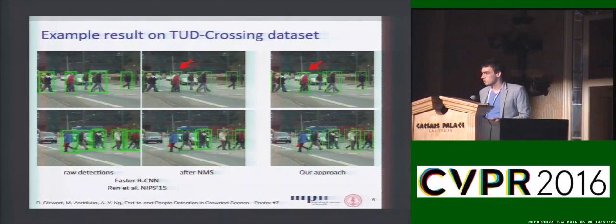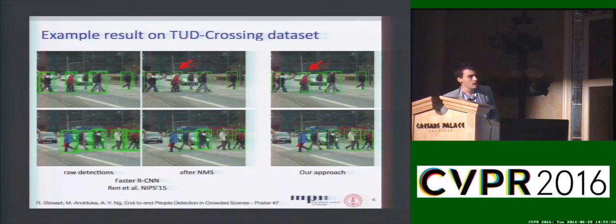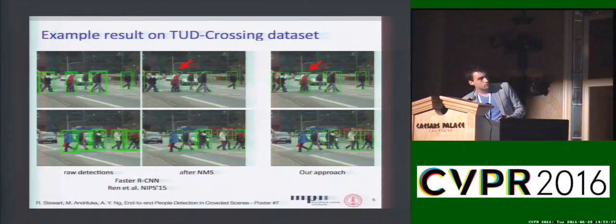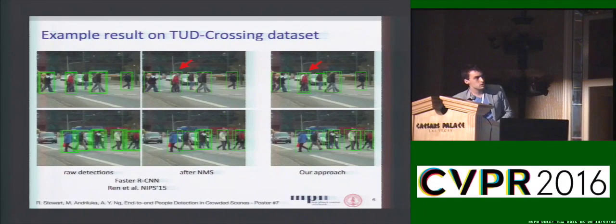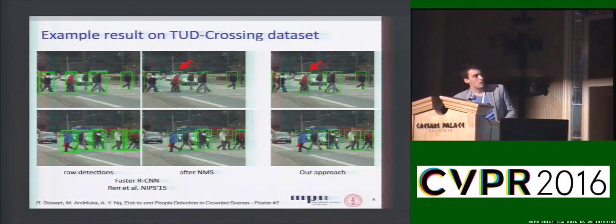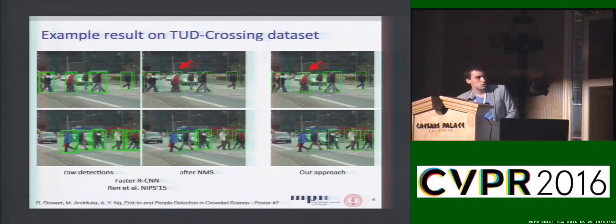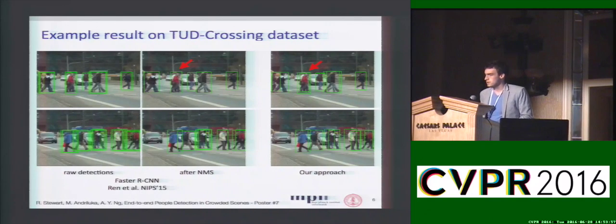Looking at some results: the leftmost column shows the raw output of Faster R-CNN — it's all over the place, an over-complete set of hypotheses that need to be merged. The middle column shows what happens after merging, and the red arrow shows that sometimes two objects yield only one detection. With our method, we sequentially output those and avoid some of those errors. If you're interested in removing post-processing from your detection pipeline, come talk to us at the poster.